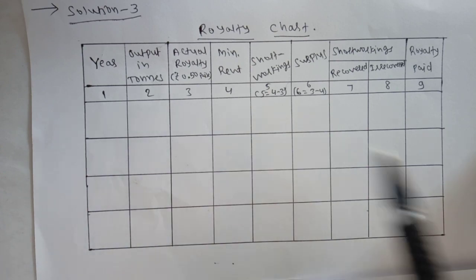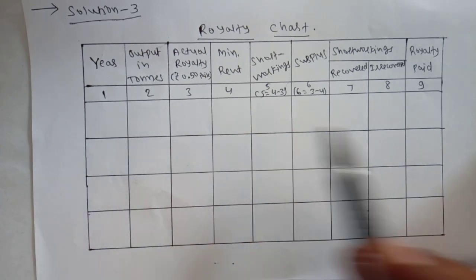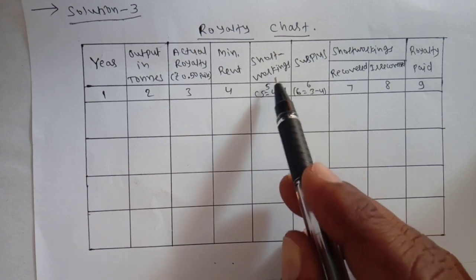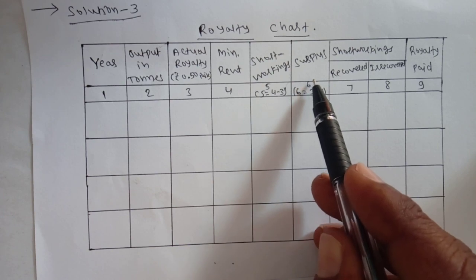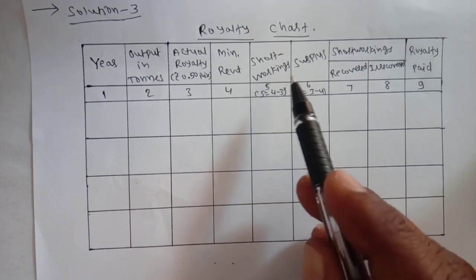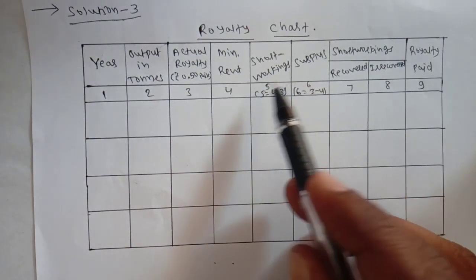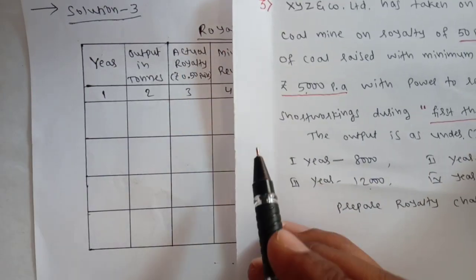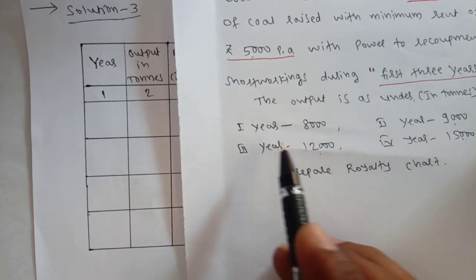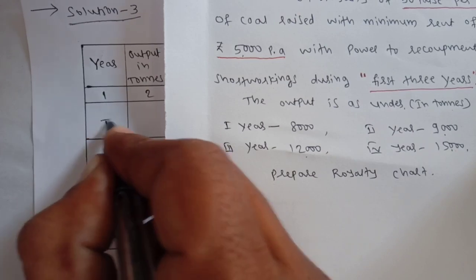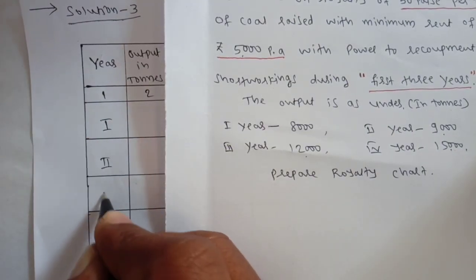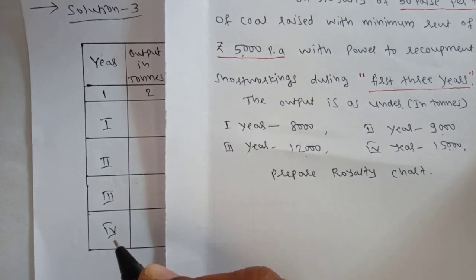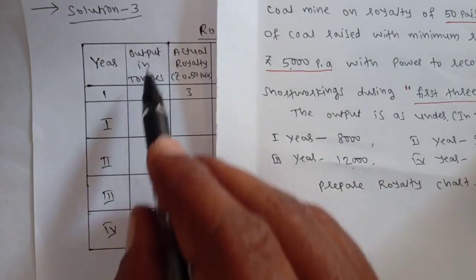This is the chart which is prepared to calculate royalty payable. I have already discussed about this chart in my previous videos. One minor change I have made here is: in the last two problems, surplus was recorded first and then short workings. But here I have made a slight change — first I have recorded short workings and then surplus. You can record them in either order. So here first I will write the years: first year, second year, third year, and fourth year. The second column is output in tons.